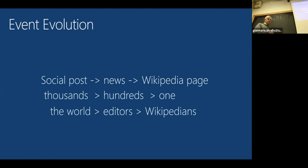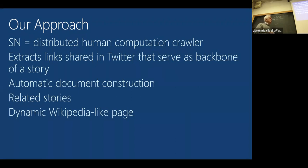We're going to take a different approach. We call this SN—we're going to look at a social network as a human crawler. If you want to build Google, you need a crawler: a piece of software that opens a socket, goes to CNN.com, opens the main page, looks for hrefs (links), and adds them to a queue. Without a crawler you cannot build a search engine—that's the precondition.